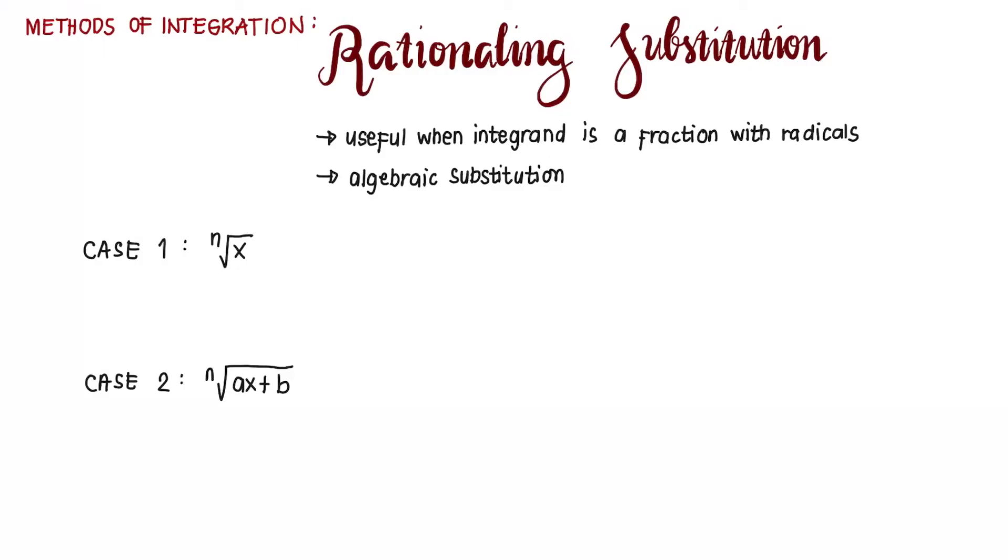All right, so if we see nth root of x, we let u equal nth root of x. But take note that n here should not just be n as in the given, because there could be more than one nth root of x in the given. So n here should be the LCD of all fractional exponents.